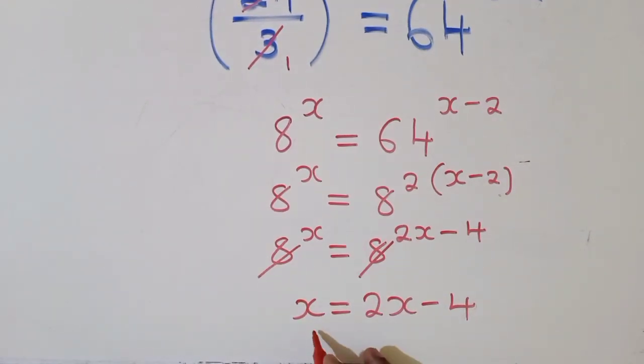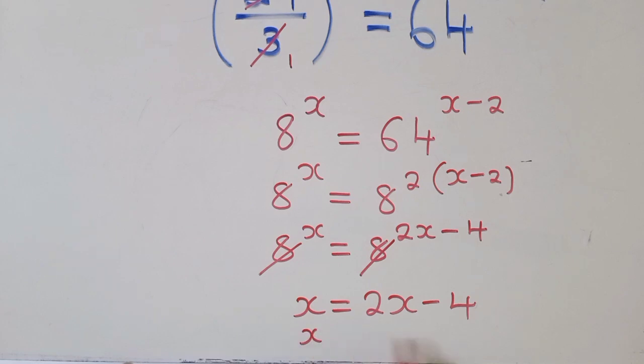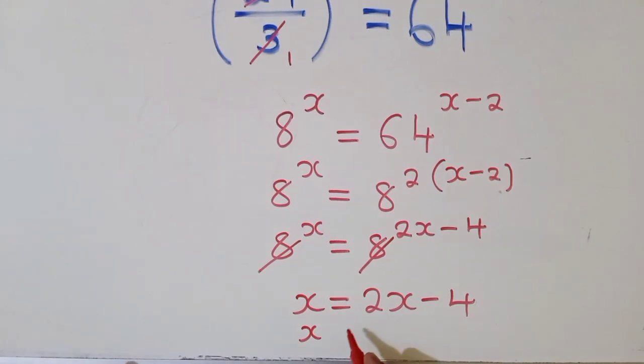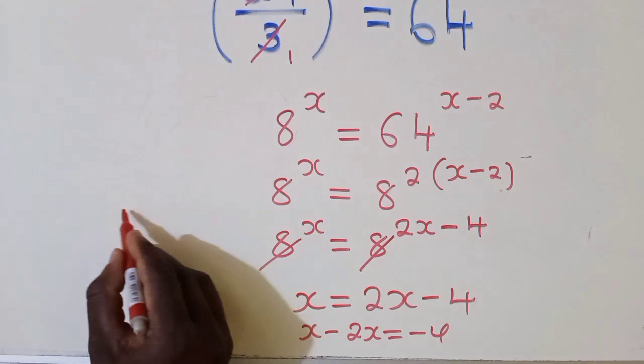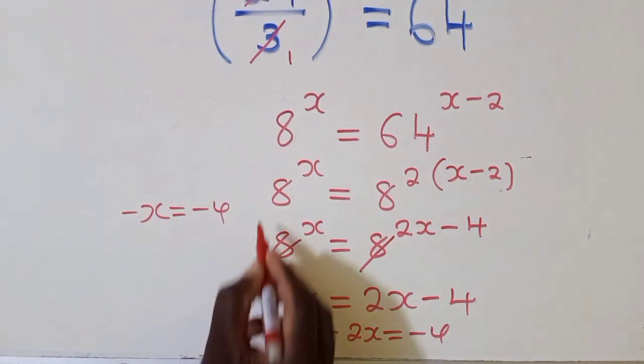So we solve this equation, we shall have x minus 2x is equal to negative 4. So when we work out here, we are getting a negative x, which will be equal to negative 4.